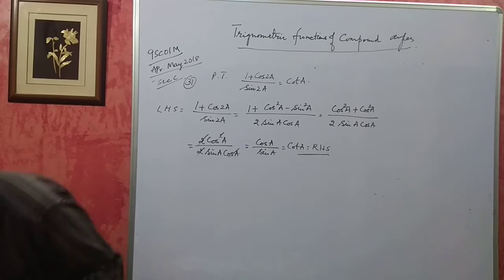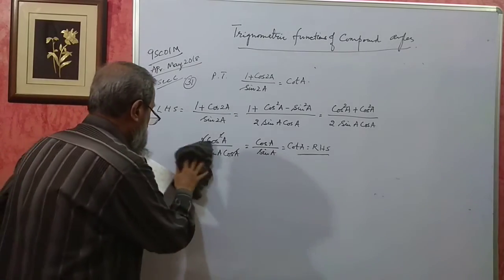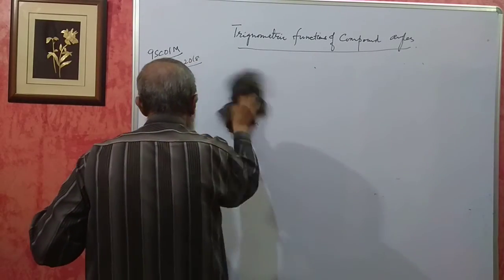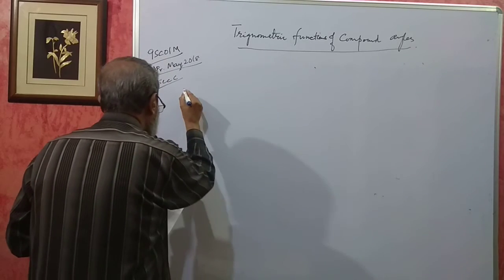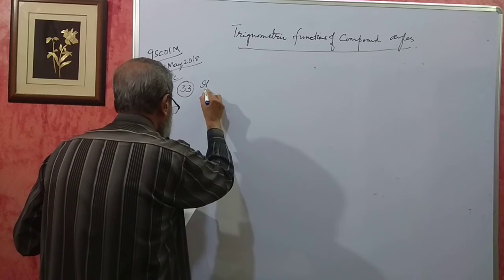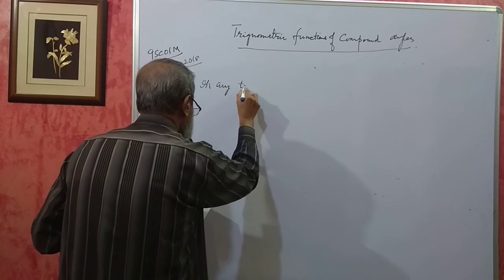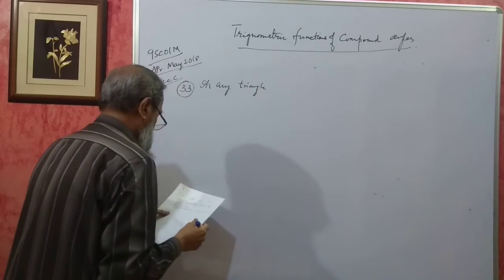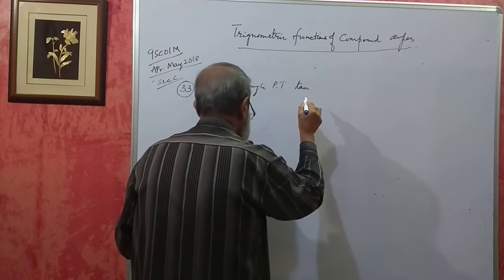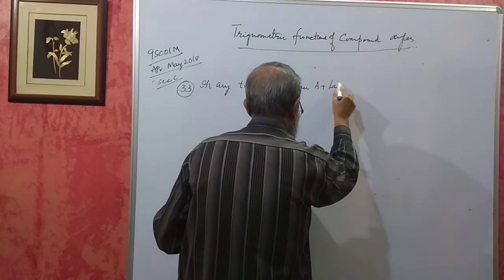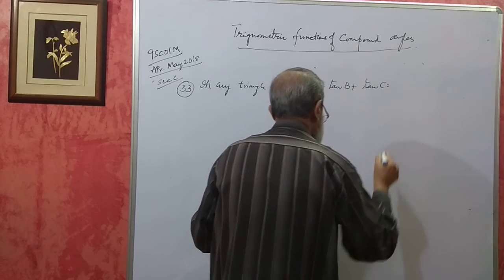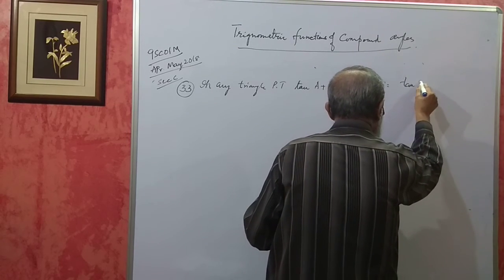Problem number 33: in any triangle ABC, prove that tanA + tanB + tanC = tanA·tanB·tanC.